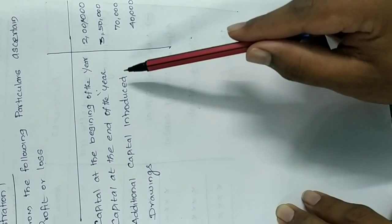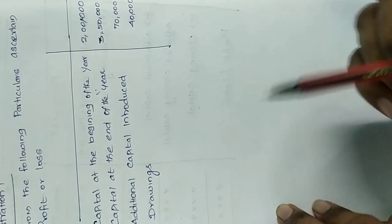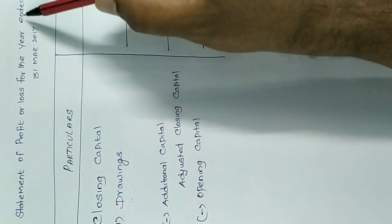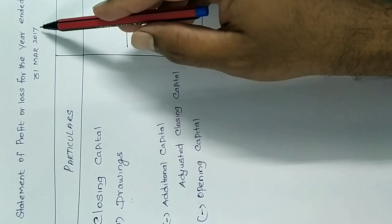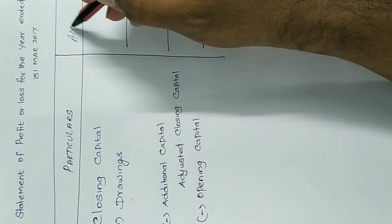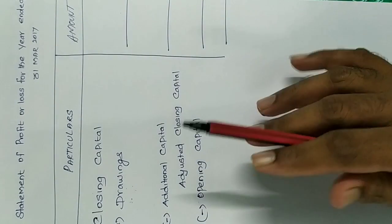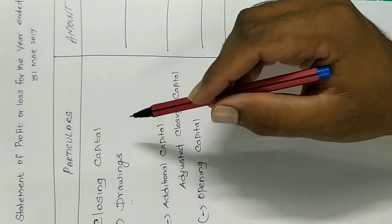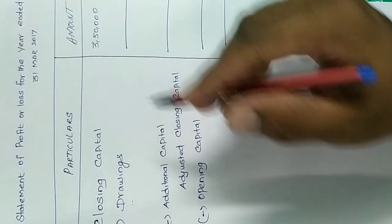Solution. The heading is: Statement of Profit or Loss for the year ended 31st March 2017. In the format, the closing capital is 3,50,000. Add drawings: 40,000. Additional capital introduced is 70,000, which is subtracted.